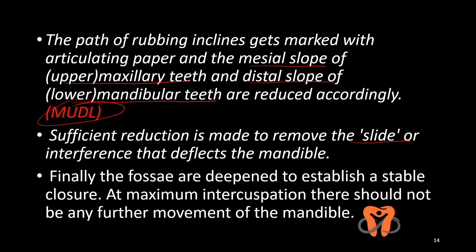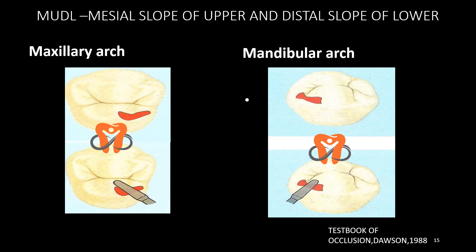After removing the slide, we finally deepen the fossae to establish a more stable closure. At this juncture, when maximum intercuspation occurs and the patient closes the mandible, there should be no further movement of the mandible. As shown in the slide: we reduce the mesial slope on the upper tooth, and for the lower arch we reduce the distal slope of the lower tooth. So you can remember MUDL — for centric relation interferences, this is the pattern to follow.